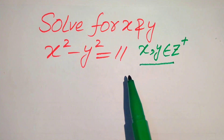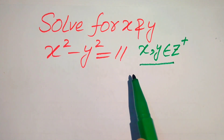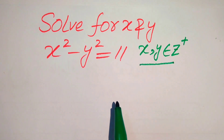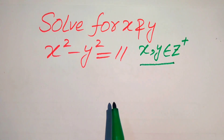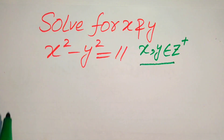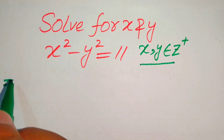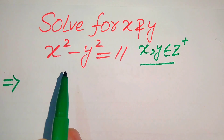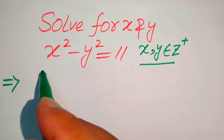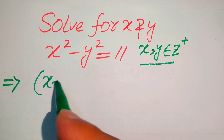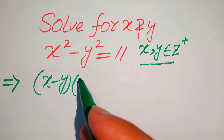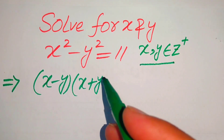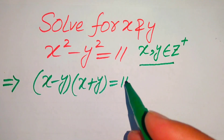We solve this problem for only positive integer values of x and y. I hope you like this method, but if you have any other method in mind, please don't hesitate to write it in the comment section. The very first thing we are going to do is apply the algebraic formula: x squared minus y squared equals (x minus y) times (x plus y), which equals 11.